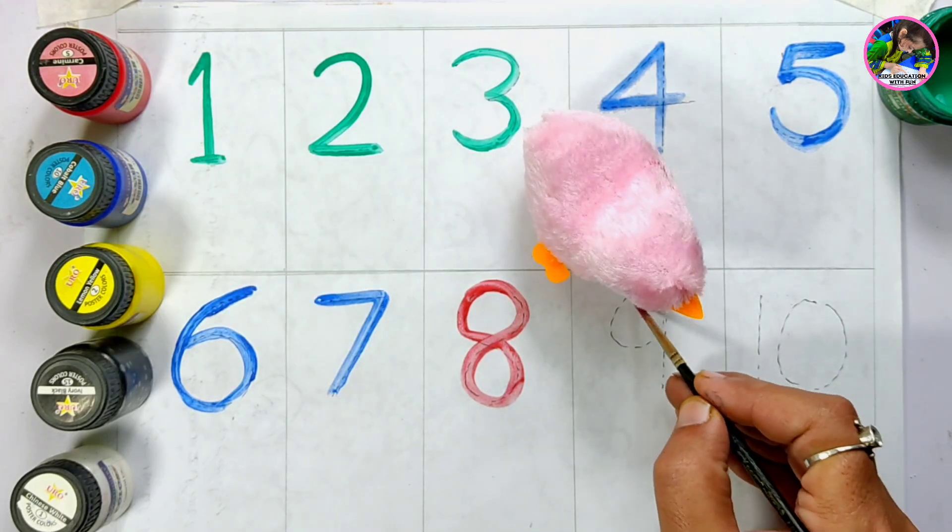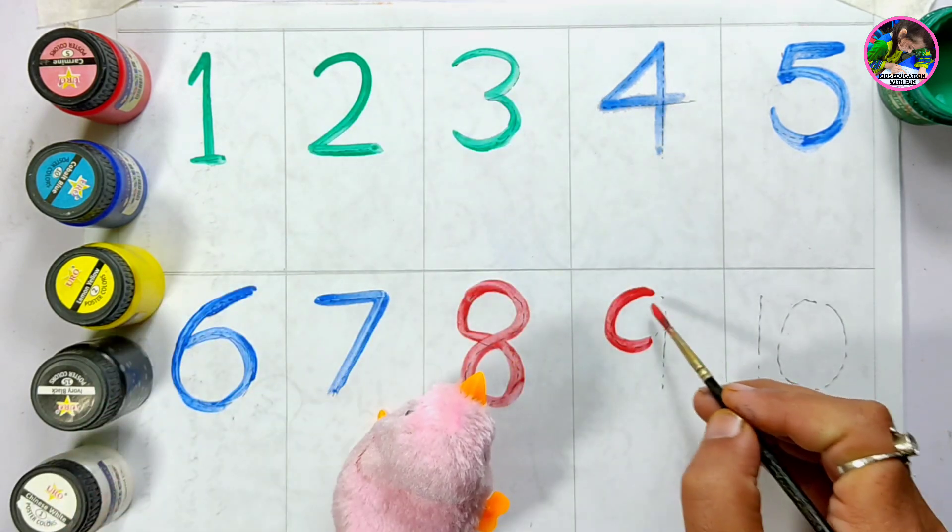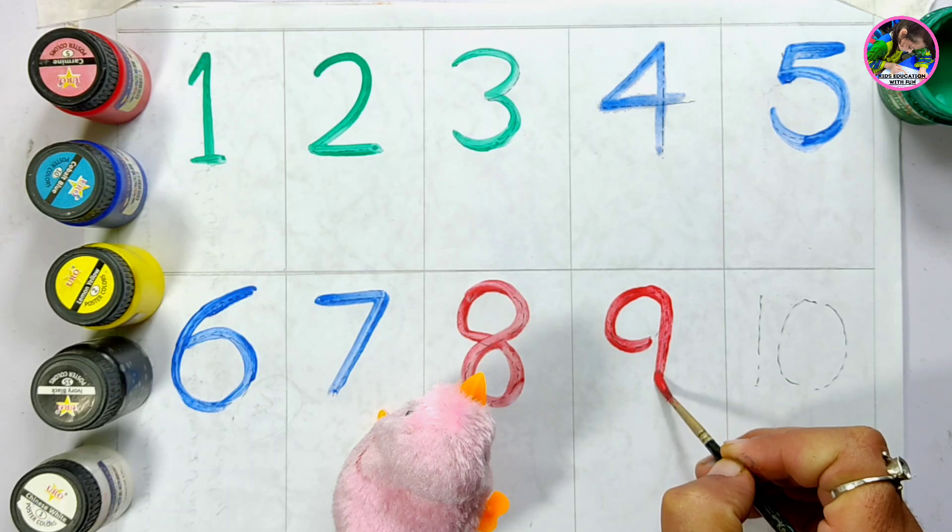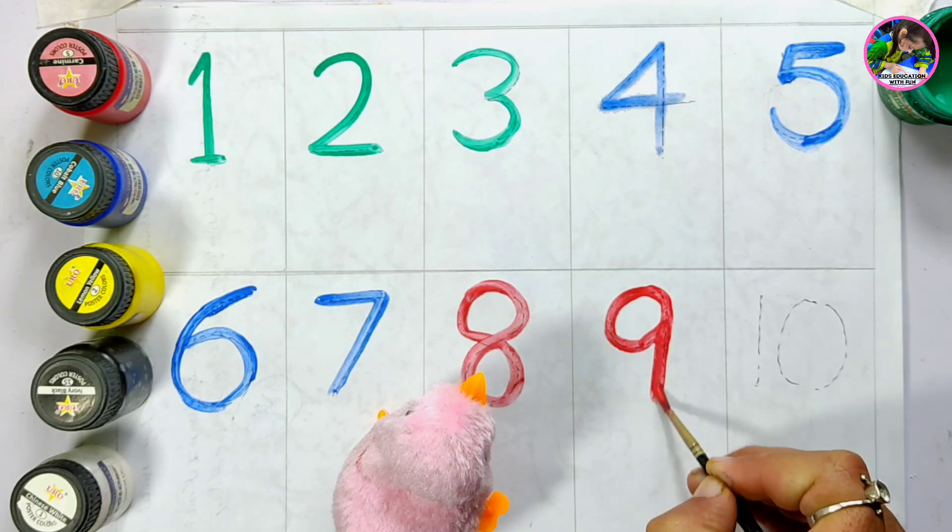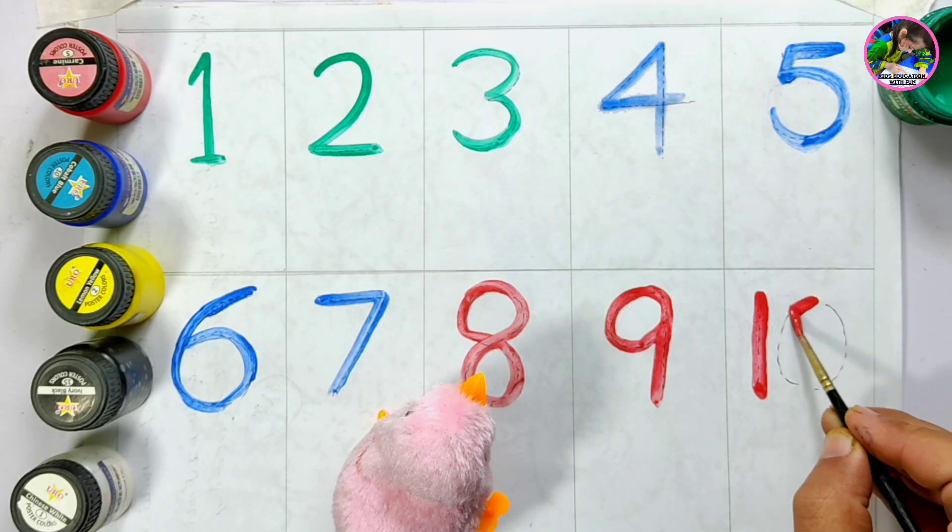Nine. Yes, this is number nine. Number nine. The last number is number ten with red color.